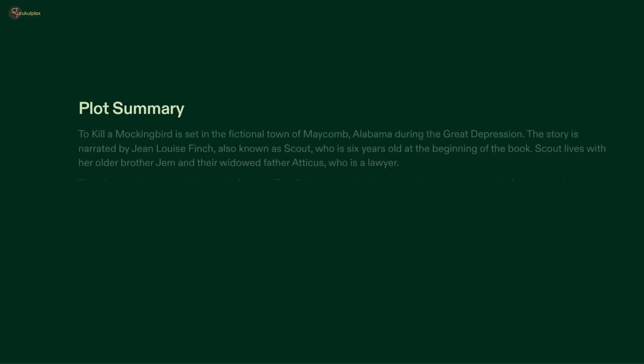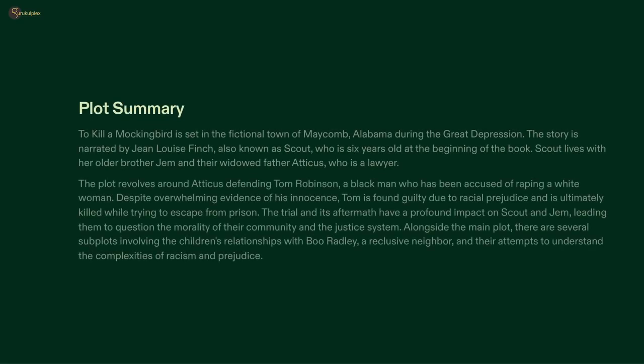The narrative of To Kill a Mockingbird follows the life of Scout Finch, her older brother Jem, and their father Atticus. Set in the small town of Maycomb, Alabama during the 1930s, the story revolves around the trial of Tom Robinson, a Black man who has been falsely accused of rape. Despite overwhelming evidence of his innocence, the jury finds him guilty due to racial bias and prejudice. This trial sheds light on the harsh realities of racism and discrimination, and through these characters, the novel explores the importance of empathy and understanding in order to create a better and more just society.